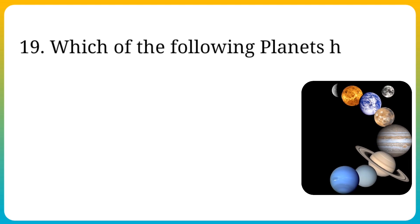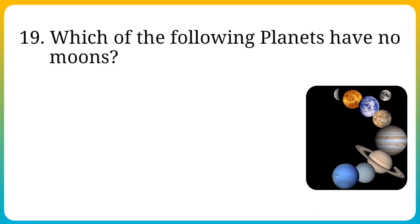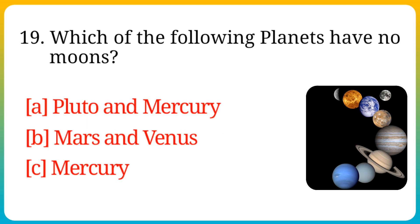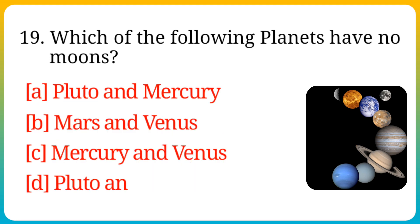Question number 19. Which of the following planets have no moons? Options are: A. Pluto and Mercury, B. Mars and Venus, C. Mercury and Venus, D. Pluto and Mars.